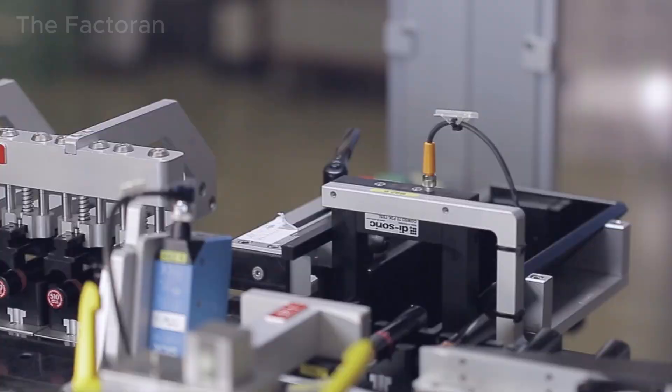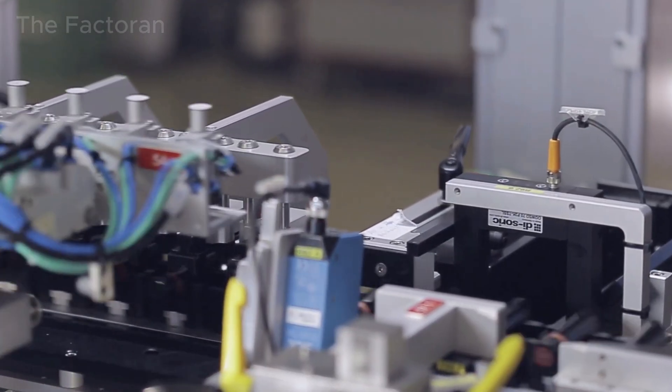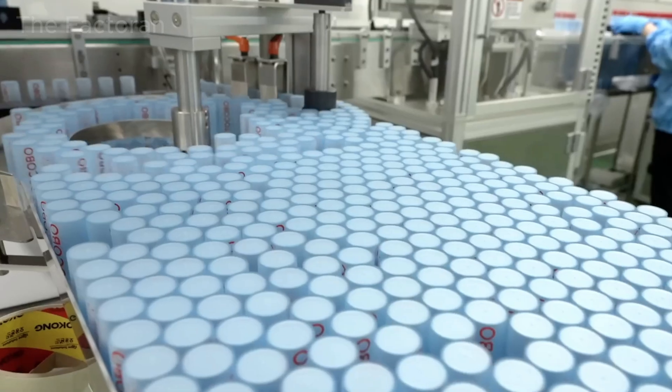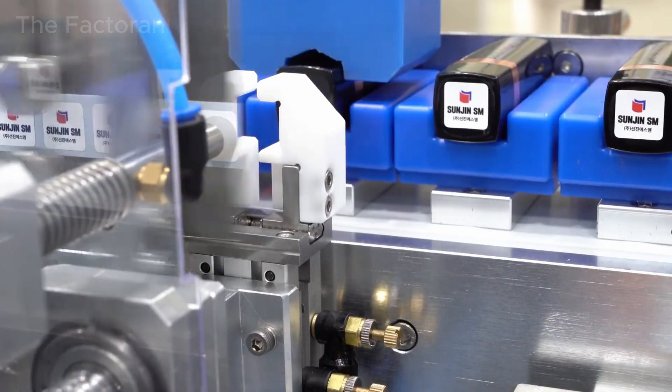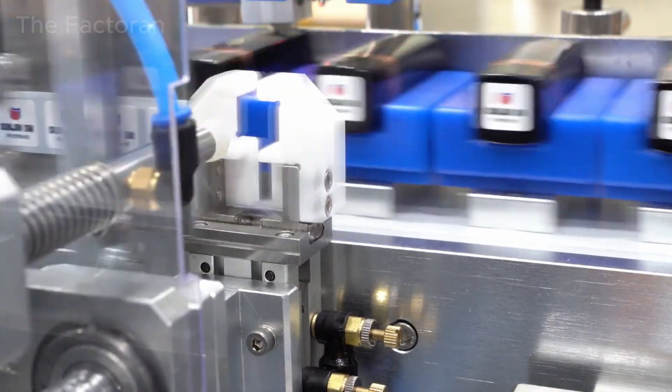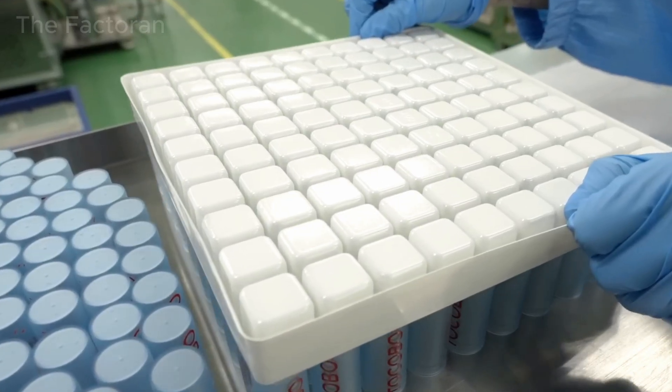On some production lines immediately after capping, the lipsticks undergo a final visual inspection. Products showing surface scratches or minor misalignments are removed, and authenticity seals or brand labels are applied to reinforce product integrity and consumer trust.